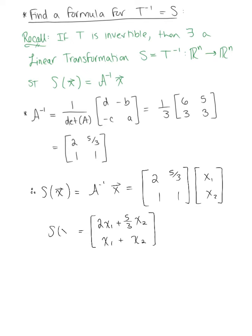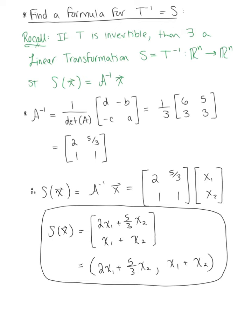And whether you leave this or you rewrite it, you can either leave your final answer in this form or rewrite it as column or row vectors: (2x₁ + (5/3)x₂, x₁ + x₂). So either notation is beautiful. And we have officially found the formula for the inverse of our linear transformation.